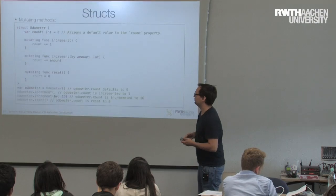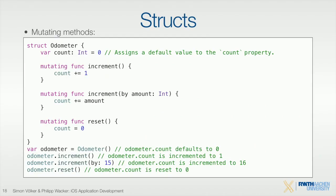A struct is a fixed set by design — it's not meant to be easily modified. If you want a function inside a struct to modify a variable, you have to declare it with the mutating keyword. Without that, a function cannot edit values inside the struct, even if the variable is a var. So if you're running into issues modifying struct values, don't forget the mutating function keyword.